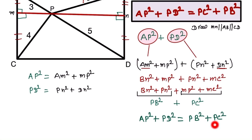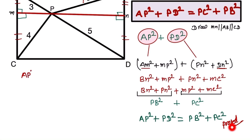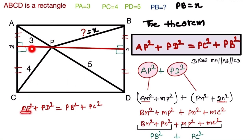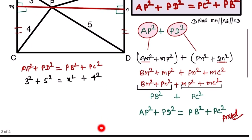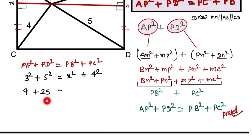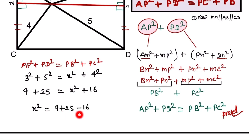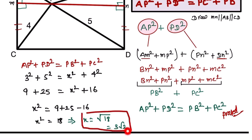We have now proved that for any point P in the rectangle, AP² + PD² = PB² + PC². Substituting our values: 3² + 5² = x² + 4², which gives 9 + 25 = x² + 16, so x² = 18, and x = √18 = 3√2. This is our final answer.